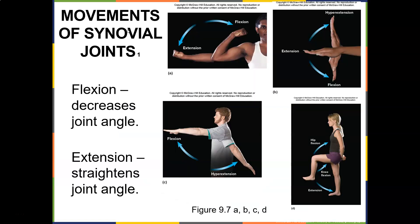Movements of synovial joints include flexion, which is bending, and extension. You can flex or extend your wrist, and you can flex or extend your shoulder at the glenohumeral joint. Flexion decreases the joint angle and extension straightens it. For example, here's hip flexion, knee flexion, and knee extension.